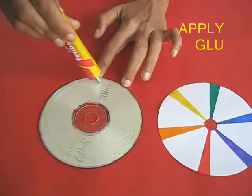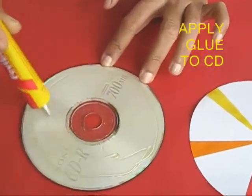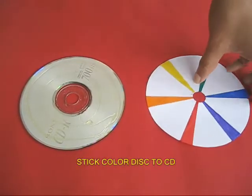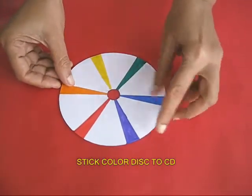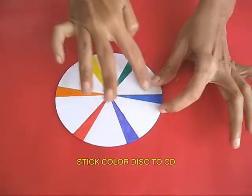Then take an old compact disc and apply rubber adhesive on top. Take your color disc and stick it on the CD. Smoothen it out.